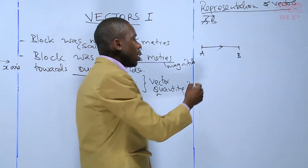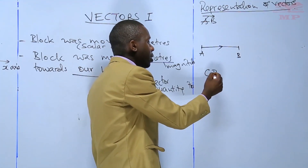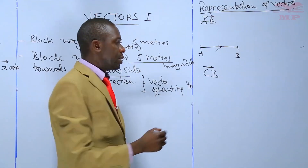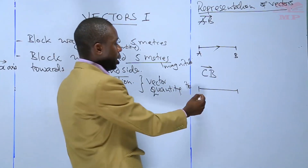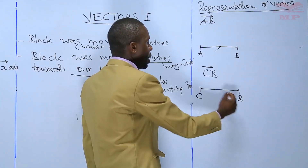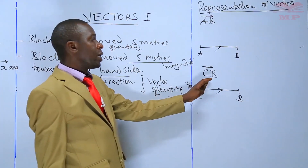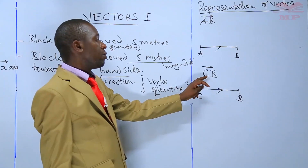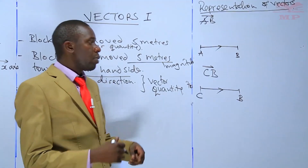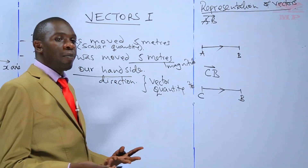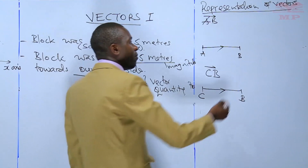For instance, you can represent vector CB, which means we have a line from C towards B — that is the direction, showing us that this vector's direction is from C to B. There are also situations where vectors can be represented by a single small letter.